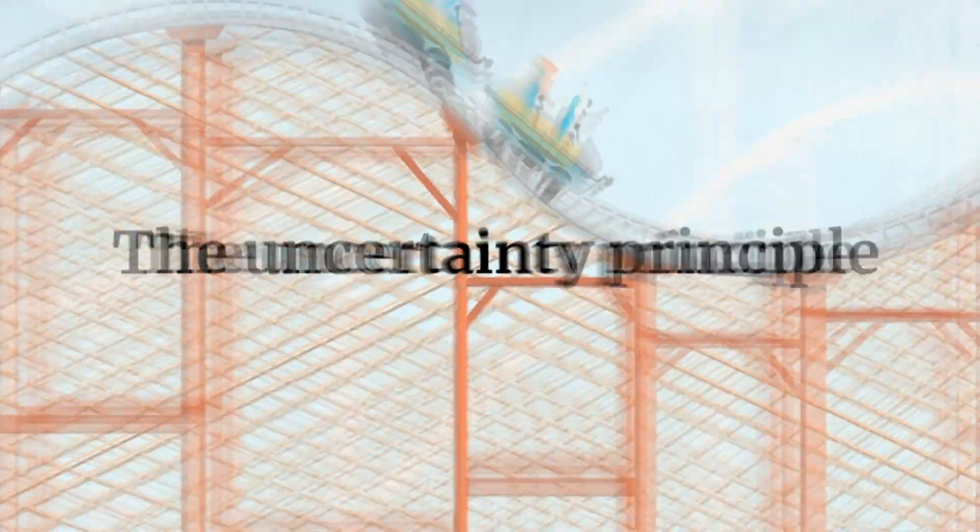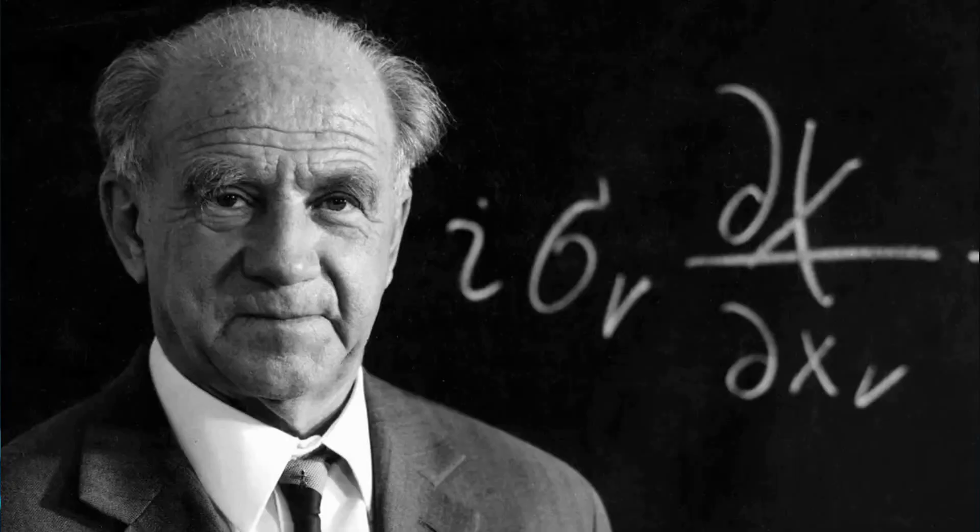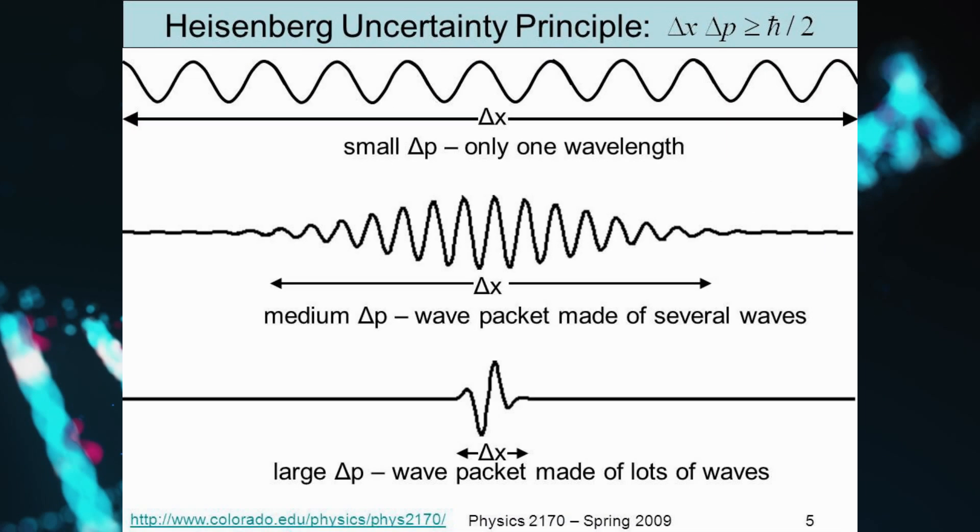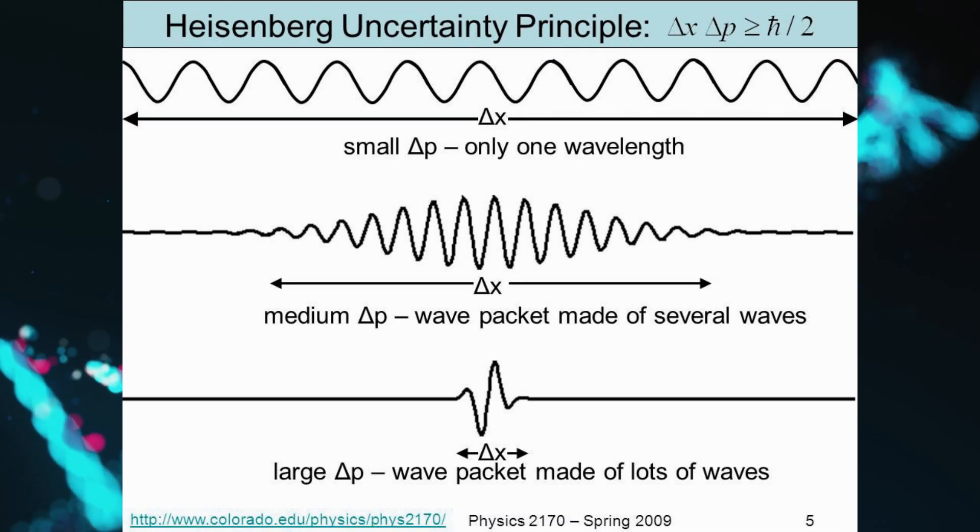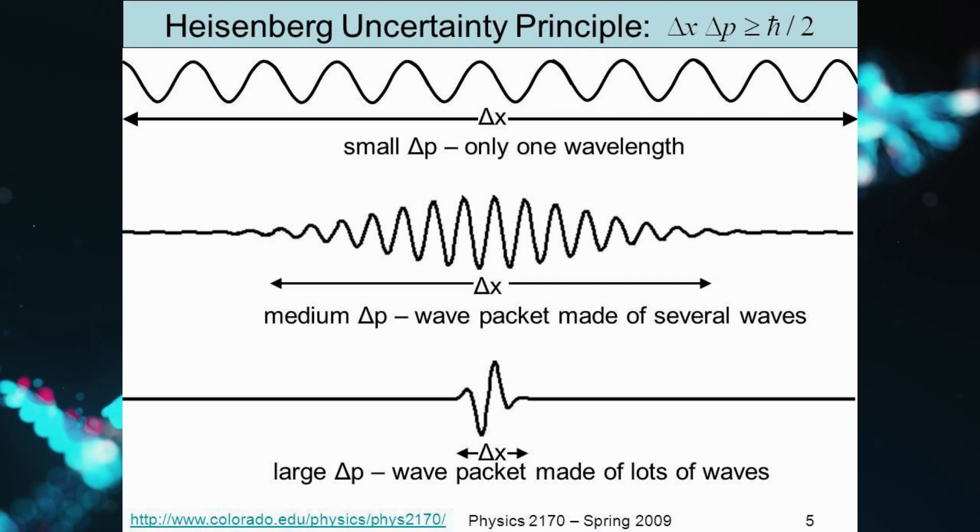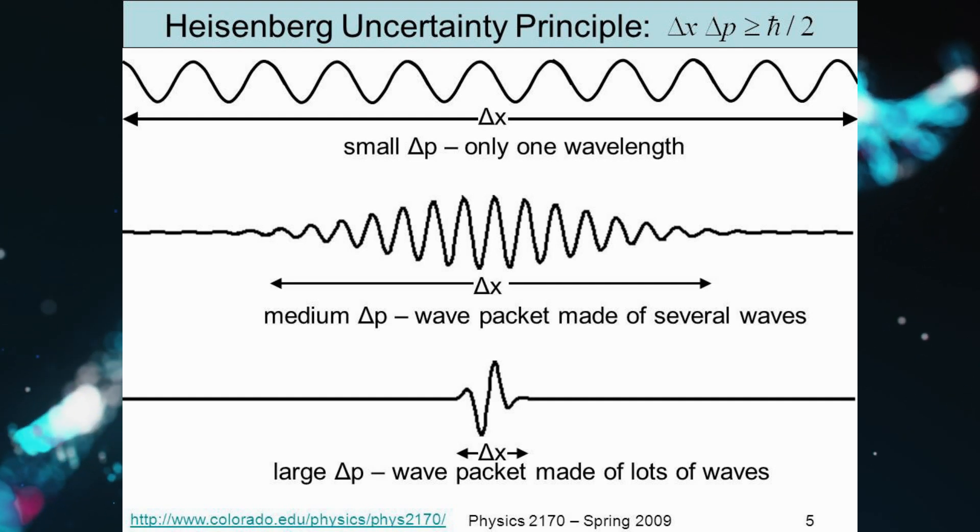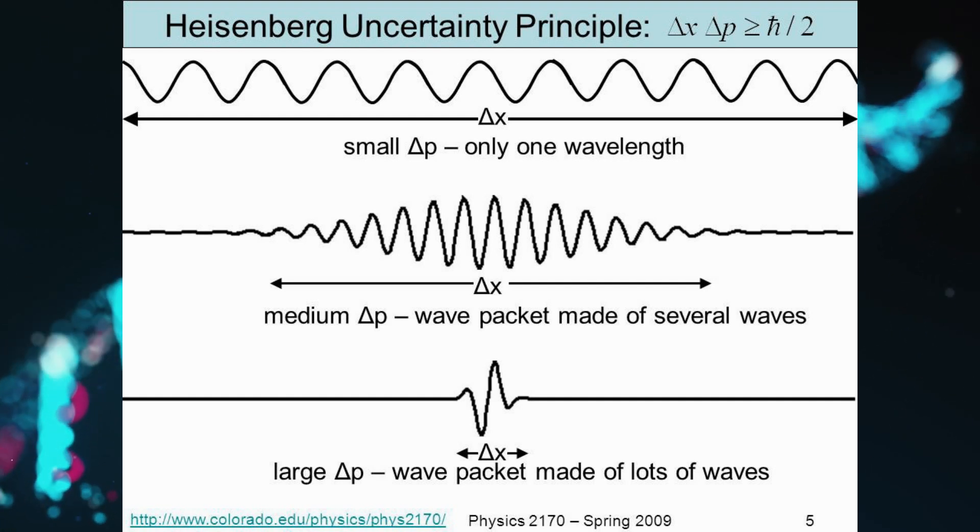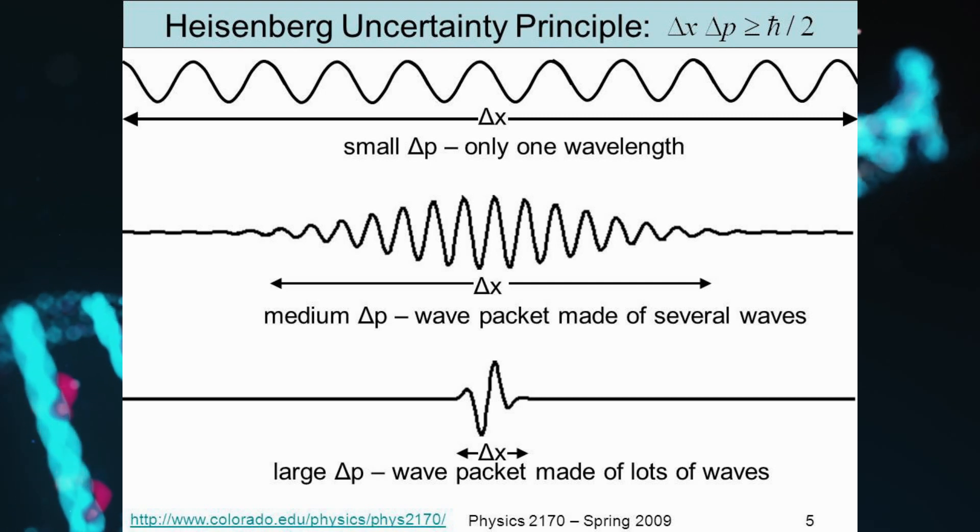Let's start with the Uncertainty Principle. The Uncertainty Principle, formulated by Werner Heisenberg, states that certain pairs of physical properties cannot be simultaneously known precisely. In everyday life, calculating the speed and position of a moving object is relatively straightforward.